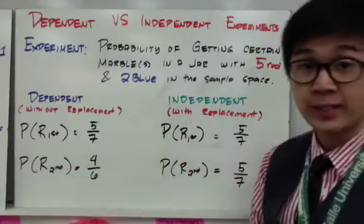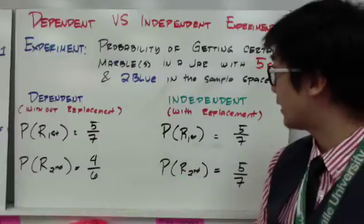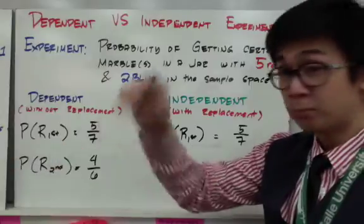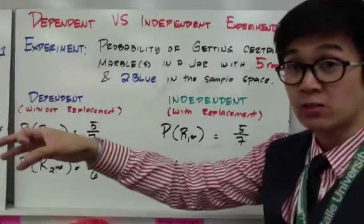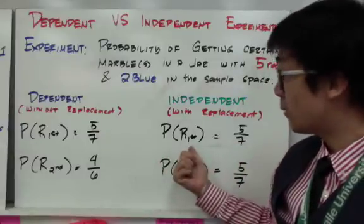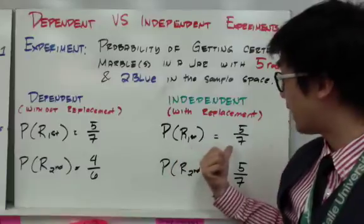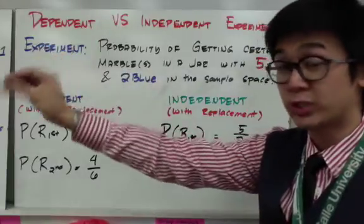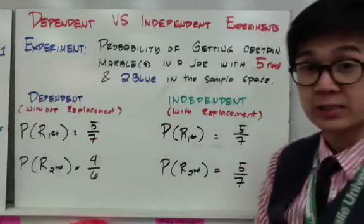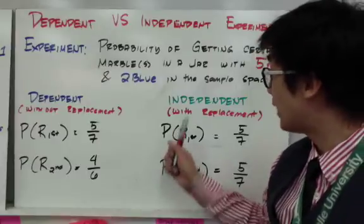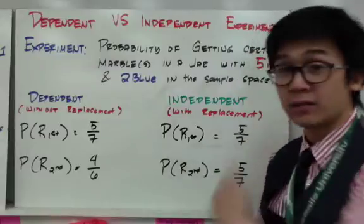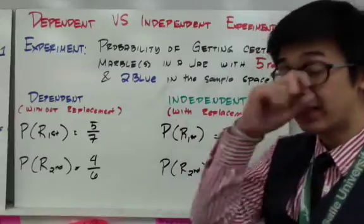However, it becomes independent if the rule states with replacement. Every time you pick a marble, you return it to the jar before the next pick. So the probability of getting a red marble is five out of seven on the first try and remains five out of seven on every subsequent try, no matter how many attempts, making it an independent event.